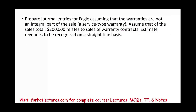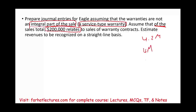Now we're going to change the scenario a little bit and prepare the journal entries assuming the warranties are not an integral part of the sale. In other words, we made the sale, but part of the price reflects a service-type warranty. We're going to assume that of the total sales of $4.2 million, $200,000 relates to the warranty contract — meaning the product itself is $4 million, but we added $200,000 for the service-type warranty.